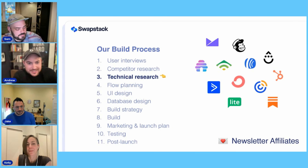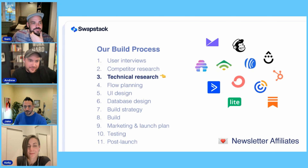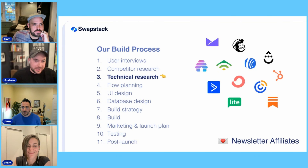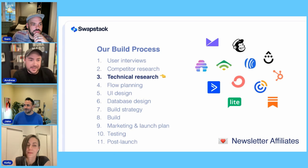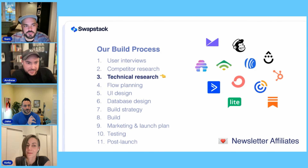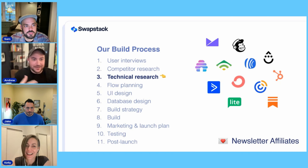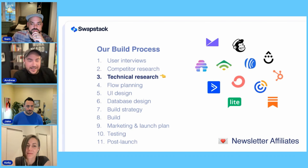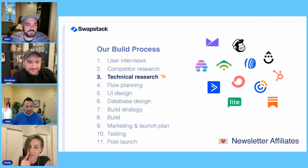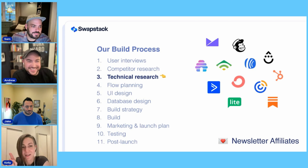If you had to narrow it down to the highest-value item you'd recommend new builders start with early, what would you pick? I think number four — flow planning — is the key one. For this particular feature, we were really reliant on connecting with other services: MailChimp, Substack, ConvertKit, all these other companies. Jake, who is the API guru on the team, had to test all of these out — research whether they had an API, how it worked, read the documentation, do test runs. He spent quite a bit of time doing that before deciding which ones to build out.